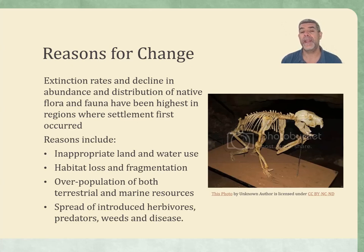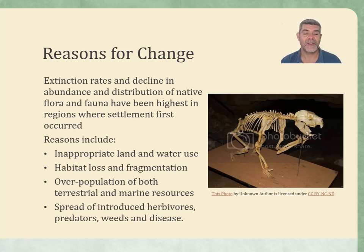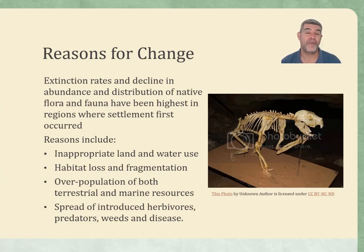Some of the reasons why we see such a challenge for human settlements include what we might call inappropriate land use and water use. They disturb the balance and change things around. There's a lot of interesting research being done into how we try and rewild — how we try and change things back or undo some of the damage that we've done, particularly in the area of water and also in land use.